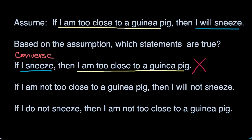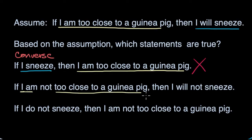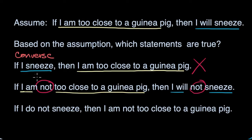Now let's look at the next statement: if I am not too close to a guinea pig, then I will not sneeze. Let's think about how this is different from our first statement. We have 'I am too close to a guinea pig,' but then we have 'not' there — so it's negating it. And instead of 'I will sneeze,' it says 'I will not sneeze.' So we've put a 'not' in front of both. This is known as the inverse.